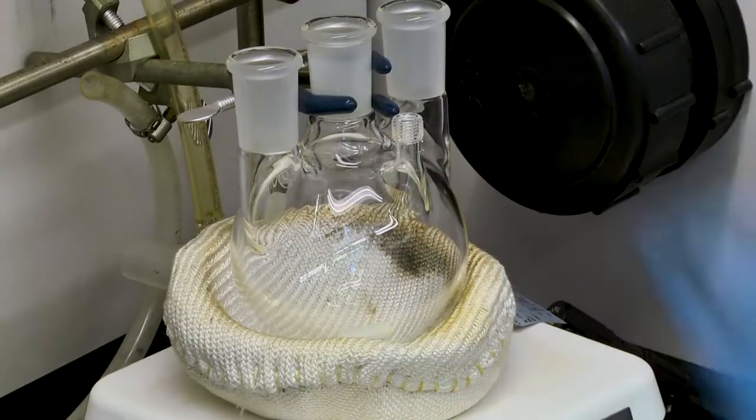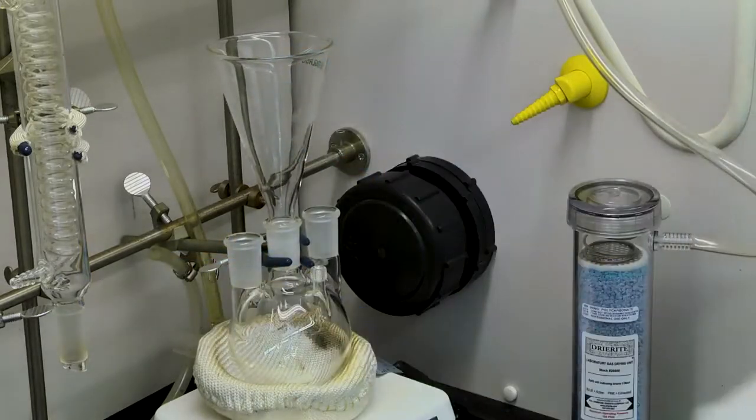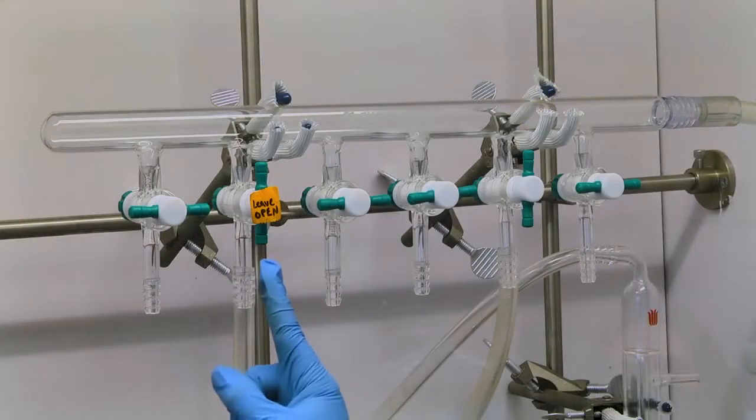Add a magnetic stir bar to the round-bottom flask and place a glass funnel in the middle neck of the flask. Make sure the safety and input stopcocks are open.